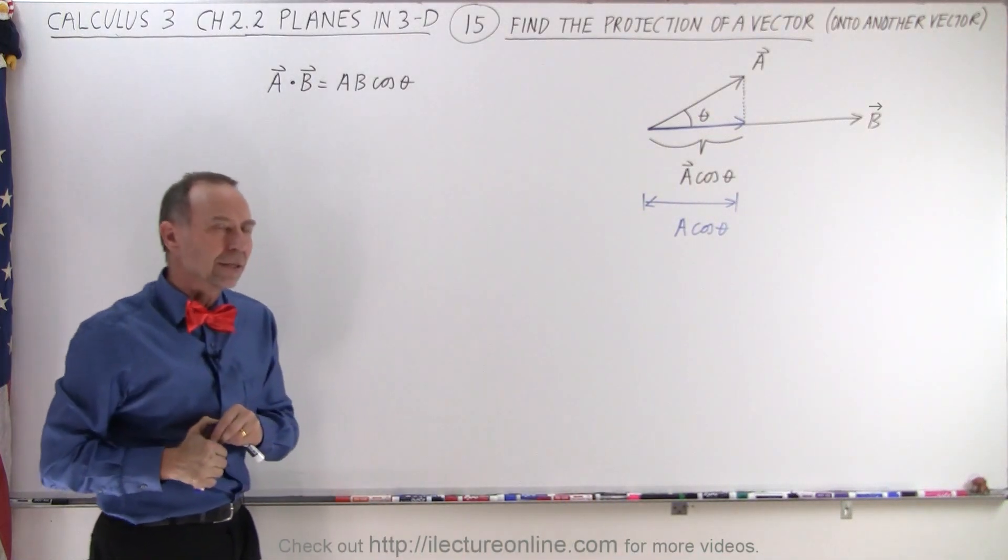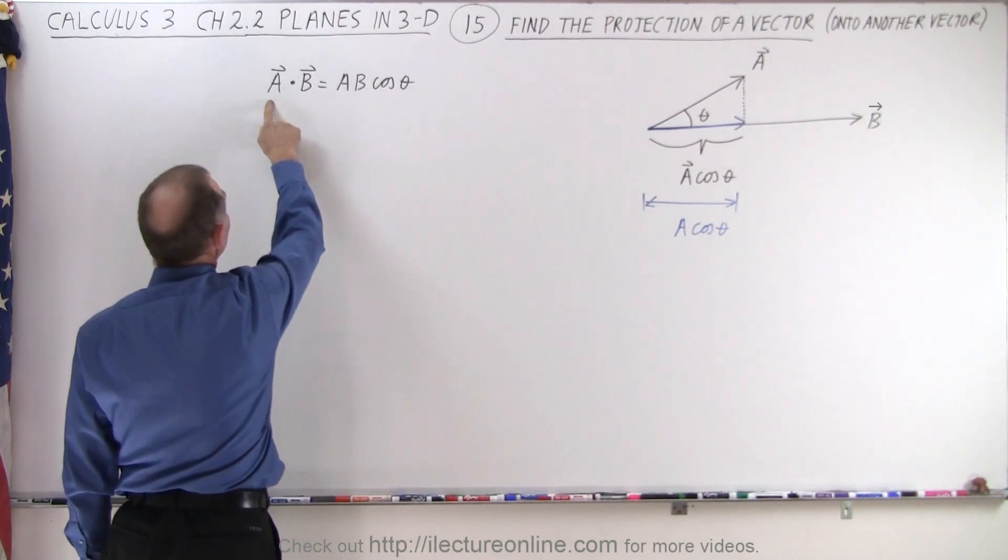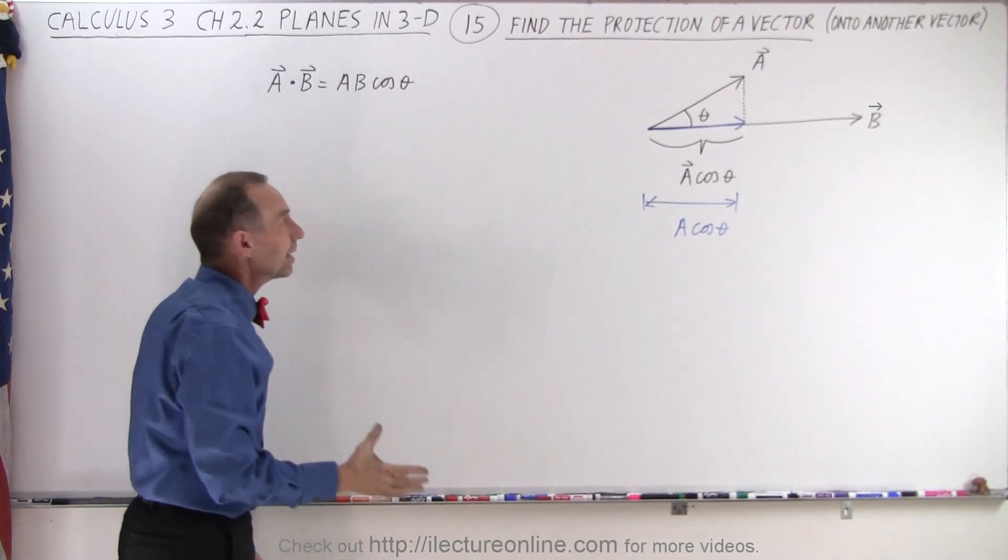So how does that relate to taking the dot product? If we take the dot product, notice that A dot B is simply the magnitude of A times the magnitude of B times the cosine of the angle theta.